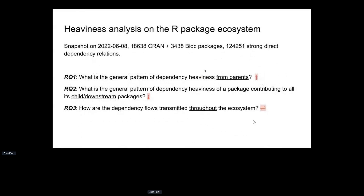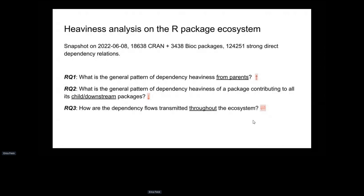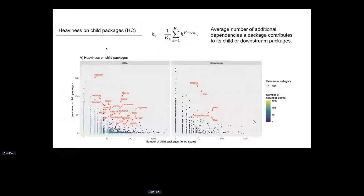Empirical studies were performed on the global R ecosystem, studying how dependencies are inherited from upstream and transmitted downstream, and treating the ecosystem as a network for network analysis. The heaviness on direct child packages (HC) is simply the mean dependency heaviness to all of a package's direct child packages. This plot shows the global distribution of all packages and their HC values, with the top packages having extremely high HC values.